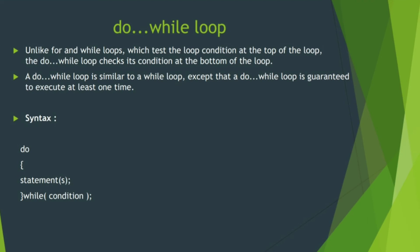Next, the do-while loop. It is different from the for loop and while loop. The syntax is: do, statements, while condition. First, the initial value will be set. Even if the while condition is wrong, at least the statement will be printed once. While condition will be checked and if satisfied, we continue to print the value of a.